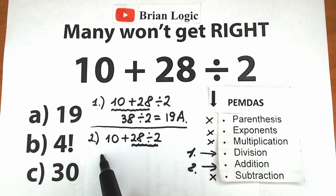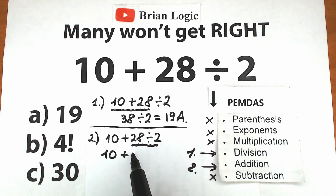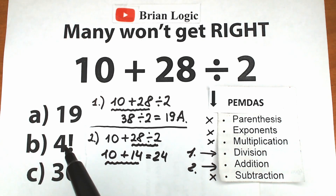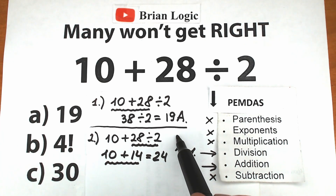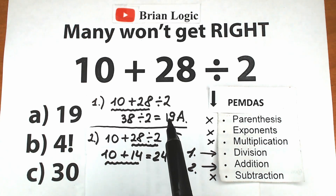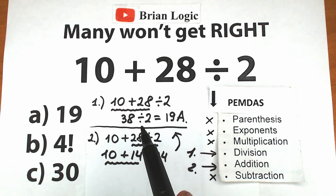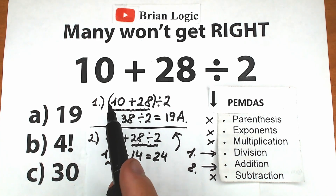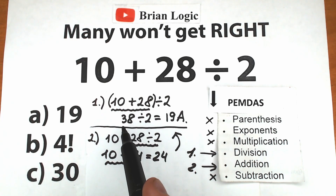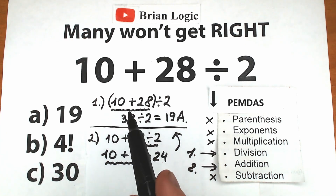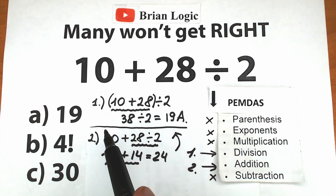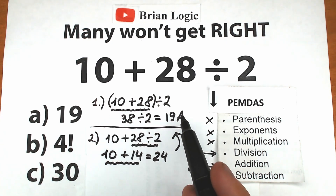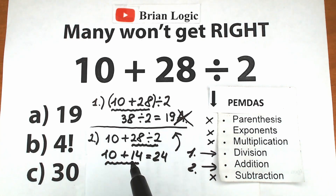Division is our first step, addition is second. We have 10 plus 28 divided by 2. So division first: 28 divided by 2 gives us 14. Then addition: 10 plus 14 equals 24. This is a really important moment because we don't have option 24 listed. A lot of students go back to 19 and say that's the correct answer. But 19 is only correct if there are parentheses — with parentheses, addition gets higher priority. Without parentheses, doing addition first is wrong. So forget option A — the correct answer is 24.